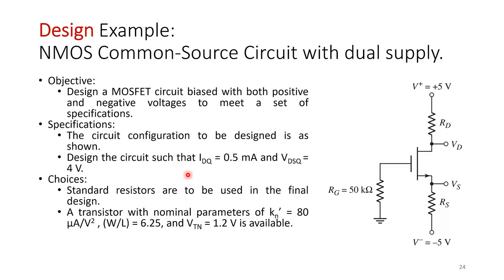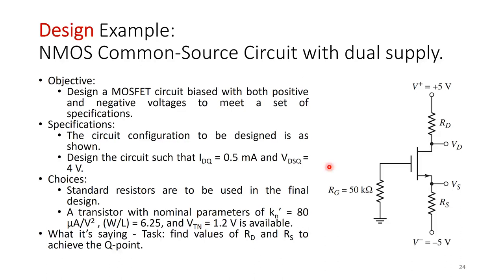Standard resistors are to be used in the final design — you choose from standard color-coded resistor values. This transistor has nominal parameters: KN' = 80 µA/V², W/L = 6.25, and VTN = 1.2 V. Our task is to find RD and RS to achieve the given Q point, with RG given at 50 kΩ. First, assume saturation to find VGS — here we know ID, so we find VGS from the saturation formula, then from VGS we find VS to find RS, then find VD and then RD, then check our assumption.